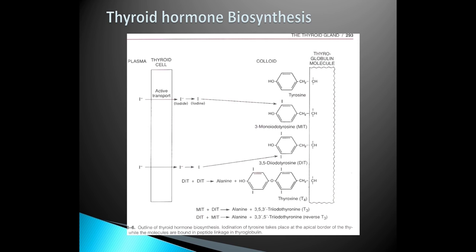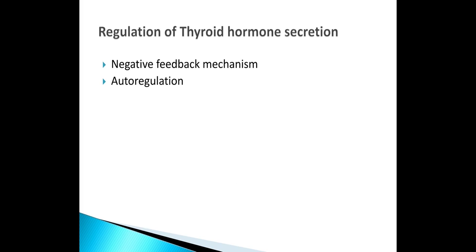During secretion, the colloid is ingested by the thyroid cells and the peptide bonds are hydrolyzed. Normal serum thyroglobulin is 6 nanograms per deciliter. It is increased in hyperthyroidism.